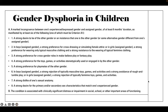Gender dysphoria in children is differentiated within the DSM. Living in a managed care world where insurance needs justification for covering things that are very helpful for people, here we go. A marked incongruence between one's experienced or expressed gender and assigned gender of at least six months' duration, manifested by at least six of the listed criteria. The condition must also be associated with clinically significant distress or impairment in social, school, or other important areas of functioning.